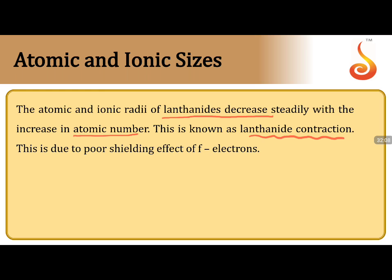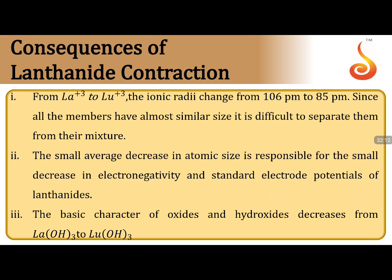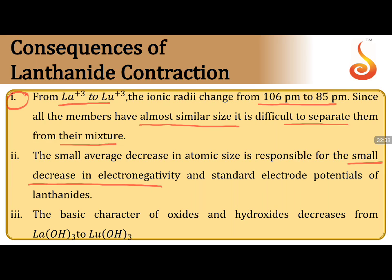Consequences of lanthanide contraction: (1) Separation of lanthanides from mixtures becomes very difficult due to similar sizes. (2) Electronegativity decreases very slightly. (3) Reduction potentials are comparable to alkaline earth metals, so reactivity is very high. (4) Basic character of oxides and hydroxides decreases from lanthanum to lutetium because it depends on size — as size decreases from La to Lu, basic character decreases. This is a very commonly asked exam point.